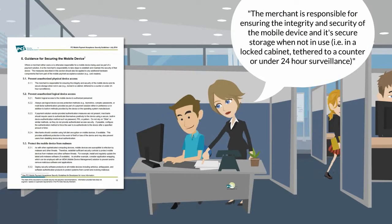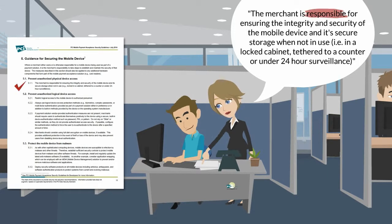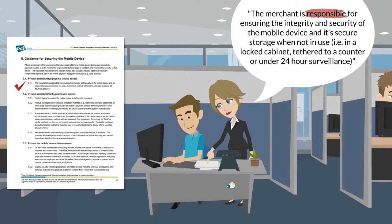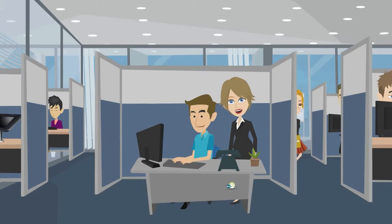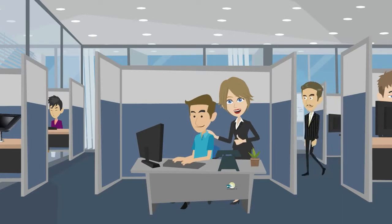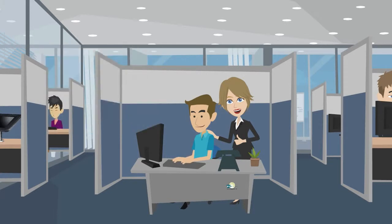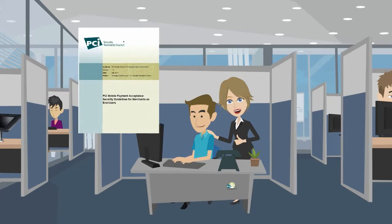On page 12 of the document, Paula also finds that the merchant is responsible for ensuring the integrity and security of the mobile device and its secure storage when not in use — i.e. in a locked cabinet, tethered to a counter, or under 24-hour surveillance. So now Paula knows how she should be considering securing her devices in a way that reflects PCI DSS requirement 9.9 as well as the mobile guidelines from PCI.